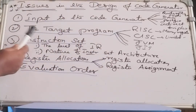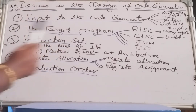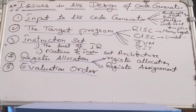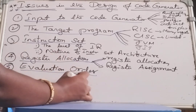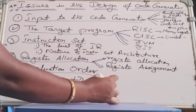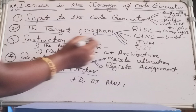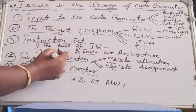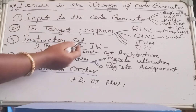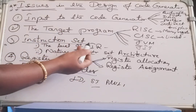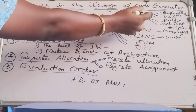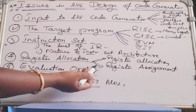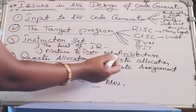The third issue is the instruction set. Depending on the architecture selected — RISC, CISC, or otherwise — what is the level of intermediate representation of that instruction? An instruction can be a load instruction, a store instruction, or any other kind. What is the intermediate representation — quadruples form, DAG form, or triples form? We also need to consider the nature of the instruction set architecture: whether it is a RISC-based machine, a CISC-based machine, or JVM, in order to generate the target program.